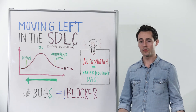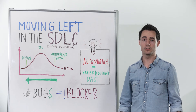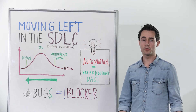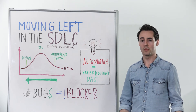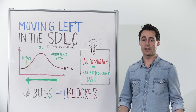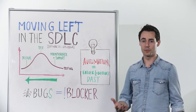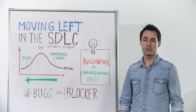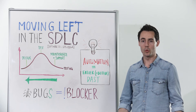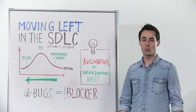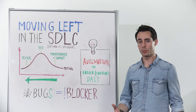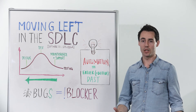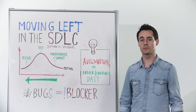The Software Development Lifecycle, or SDLC, describes the phases a software project will pass through from conception and design to development and ultimately delivery and maintenance. When we talk about moving left in the SDLC, we mean that looking for vulnerabilities should be an integral part of the development process, right from the start.